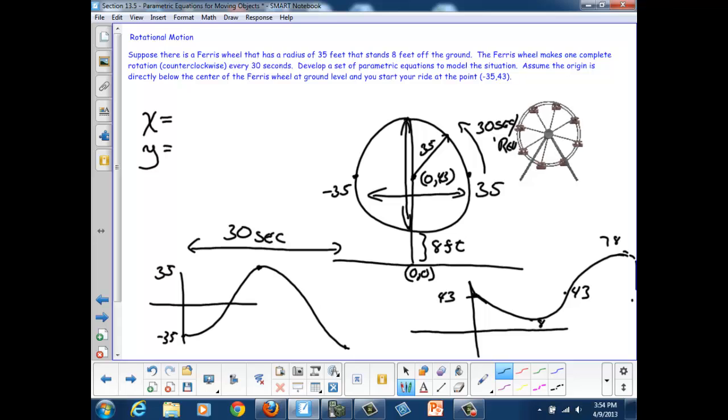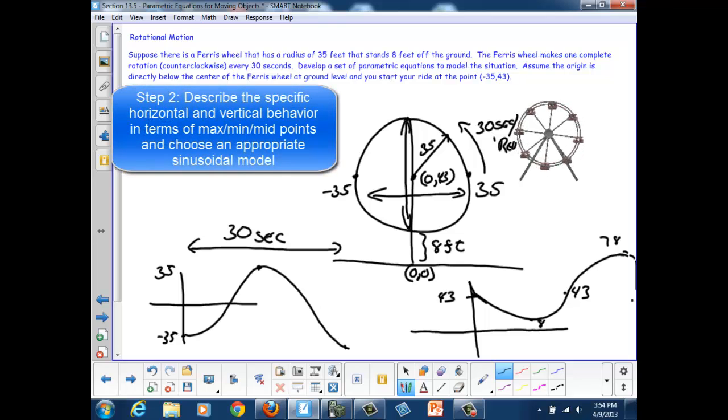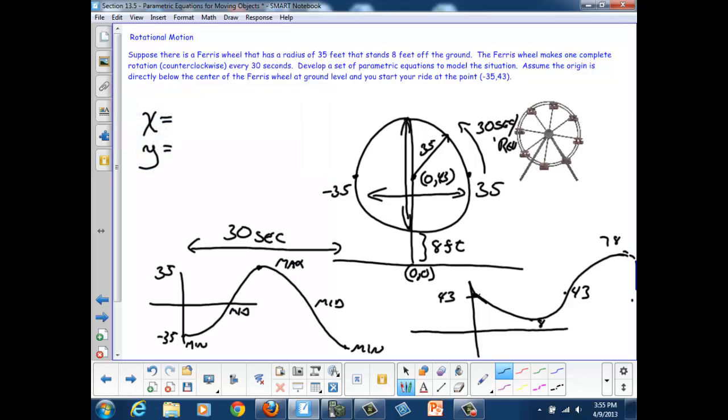So, I look at these two graphs, and I try and come up with equations to describe them. They look like sinusoids, but which sinusoids? If I look at my horizontal graph, I can see that I start at a minimum, go through a midpoint, then to a maximum, and then back through a midpoint, and then back to a minimum. Here, my vertical information, I start at a midpoint, go down to a minimum, go back to a midpoint, and go up to a maximum before I return to the midline again.